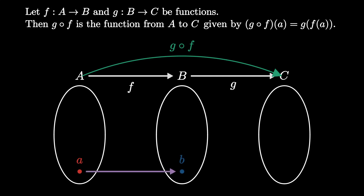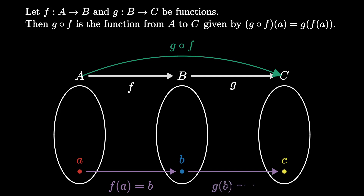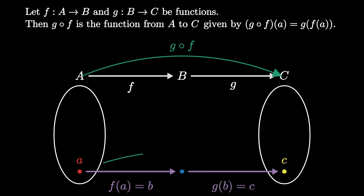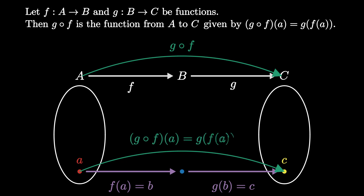That is, we send a into f, and send the resulting output from b into g. The composition takes a directly to that output, so that g composed f of a is equal to g of f of a.